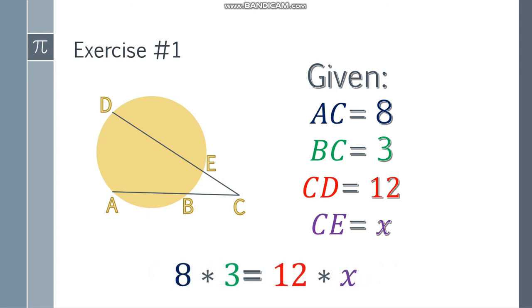Simplify: 8 times 3 is 24 equals 12x. So the value of x is 2. There you have it - the value of the external segment is 2.